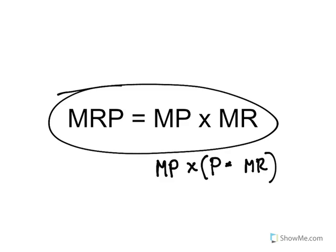So marginal revenue product is equal to marginal product, that's the change in total product, times marginal revenue, the change in total revenue. That's how you calculate that. And sometimes an AP question will have you finding marginal revenue product.